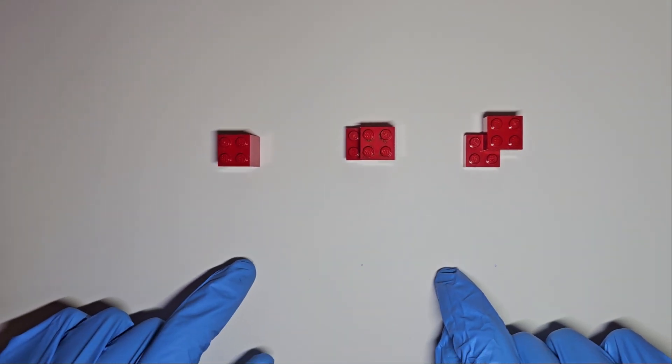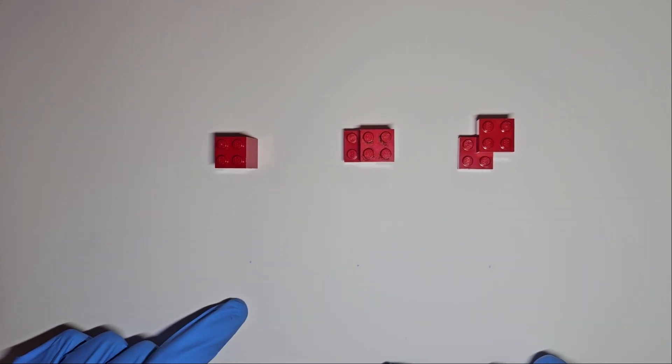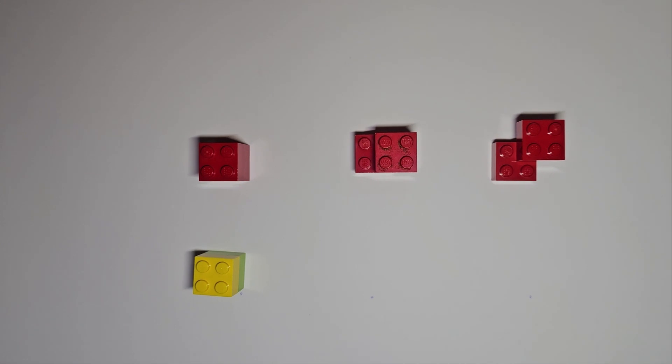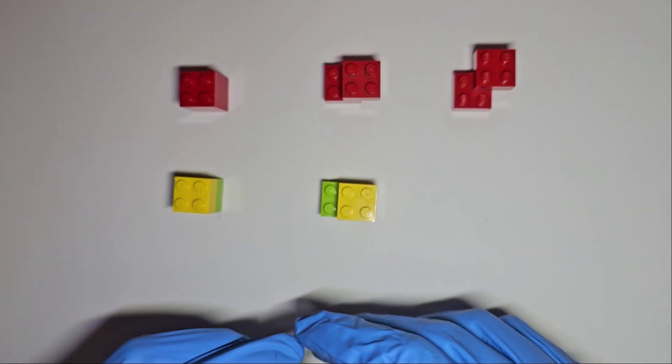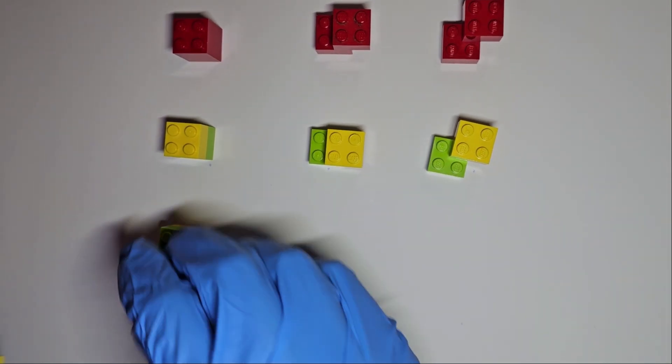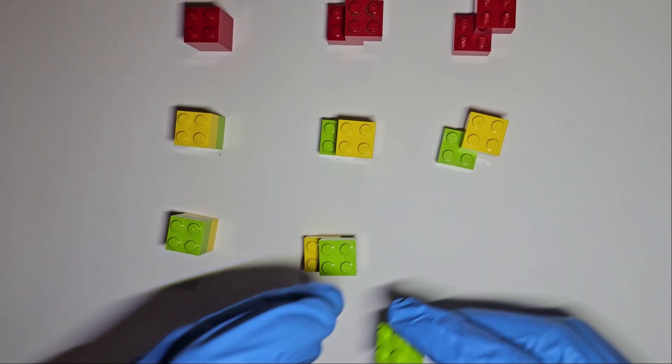What happens when we have two 2x2 bricks, but different colours? We can have all the same connections we had before, but we can also flip the positions of our bricks to generate a new one. With different colours, we have six combinations. Double that when we have the same colour.